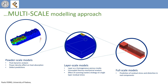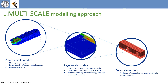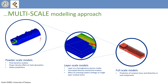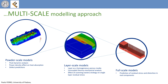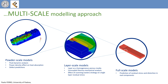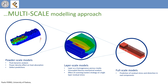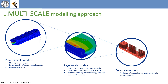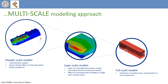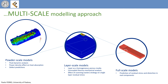When focusing on process parameters inducing defects and microstructure, powder scale models are of great help, as they are able to predict the conditions causing defects like lack of fusion or keyhole porosity.